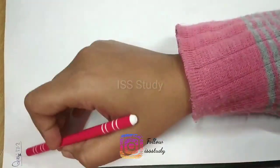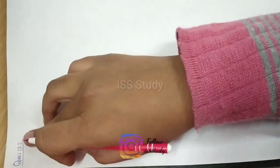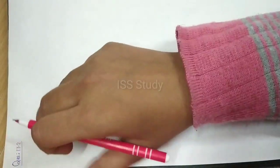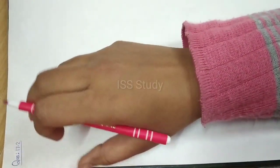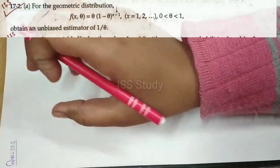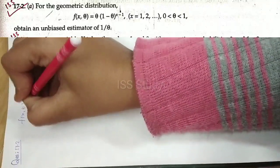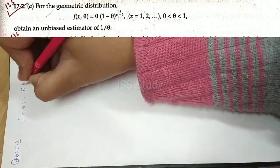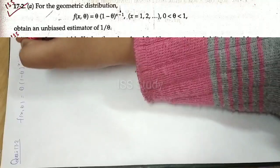Hello everyone. In this video we will discuss question 17.2 of chapter 17 from Guptan Kapoor. This question says: for the geometric distribution, f of x theta equals theta times 1 minus theta to the power x minus 1.